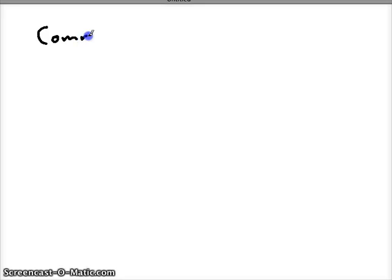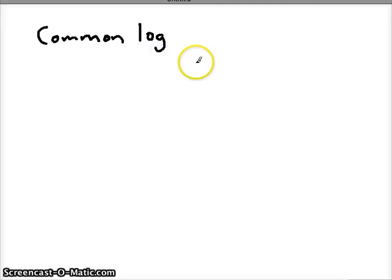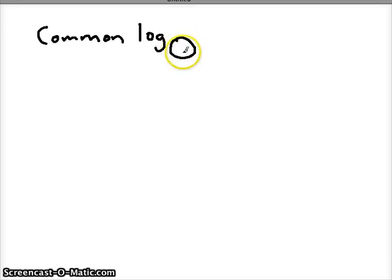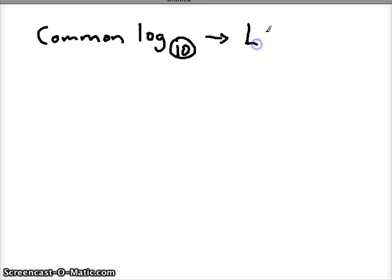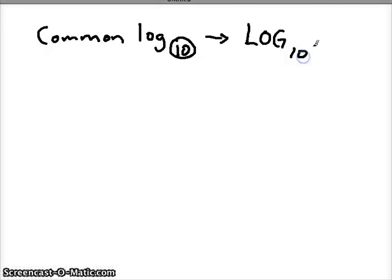In this video I'm going to be talking about two specific kinds of logs. The first is called a common log. Common logs are logs that have a base 10. Usually you will see this written as just 'log' — in fact, if you look at your calculator there's a button titled 'log', and when you press that button it is talking about a common log, a log base 10.